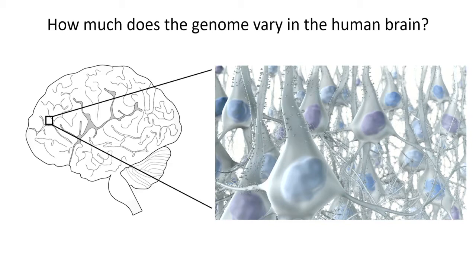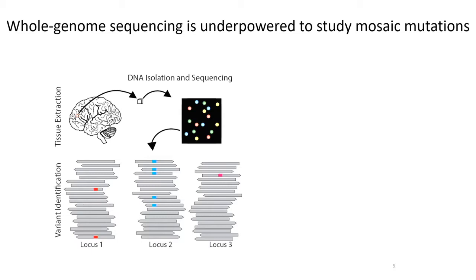This is a question I found really interesting, and in the past few years during my postdoc in Chris Walsh's lab at Boston Children's Hospital, it's what I focused my research on. I thought it was an important gap in our knowledge — because we know that variants distinguishing people can so strongly influence traits — and that by understanding how the genome varies from cell to cell, we might understand something about the function of the brain.